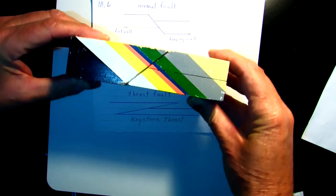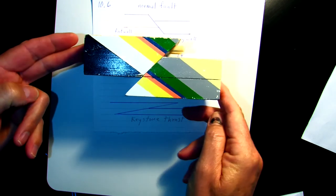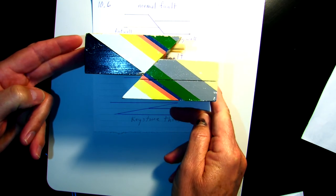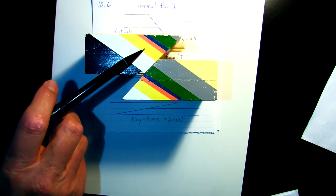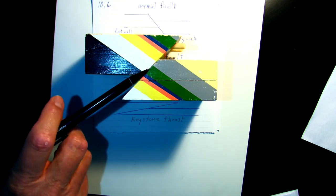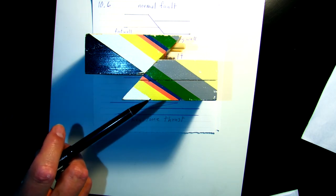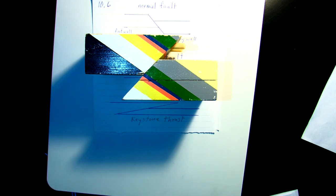Now, looking at our block example, if I push on it, notice it's shortened and thickened. And notice we could drill into this yellow layer, then drill out of it, then drill back into it again. Repeated layers of strata.